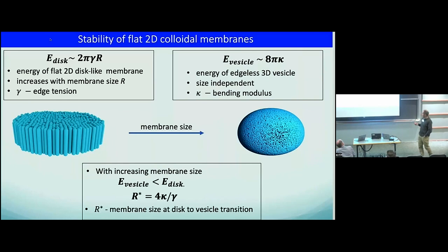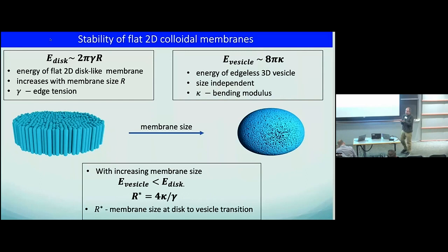You can compare the three energies, and the transition roughly happens at a critical size proportional to the bending rigidity and inversely proportional to the edge tension. The bending rigidity of a lipid bilayer is a few kBT, and the edge energy is about 100 kBT. So if you grow a lipid bilayer, it will close into a vesicle spontaneously when it reaches the order of 10 nanometers.